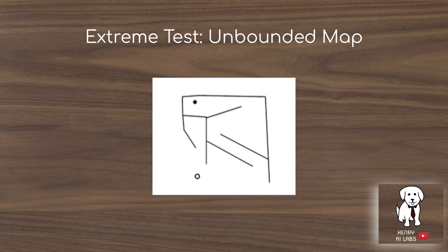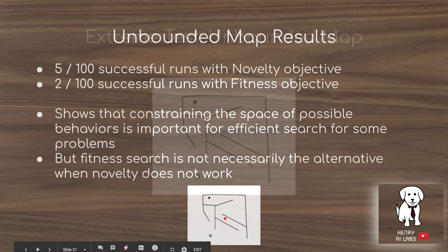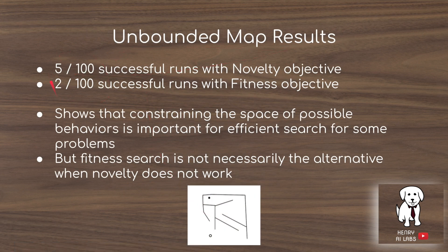Another interesting extension is the unbounded map, where the agent could theoretically travel in any direction forever. In this case, neither algorithm solves it well, although novelty slightly outperforms the fitness objective. This shows that constraining the space of possible behaviors is still very important, and fitness search isn't necessarily the right alternative when novelty doesn't work either.